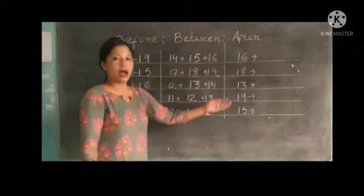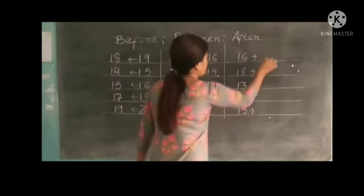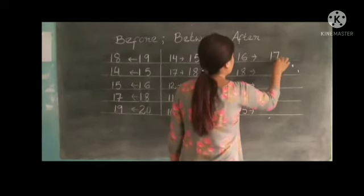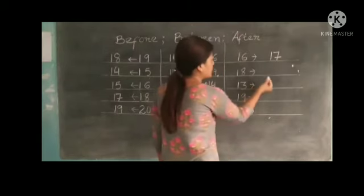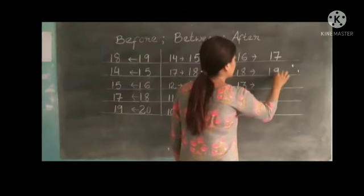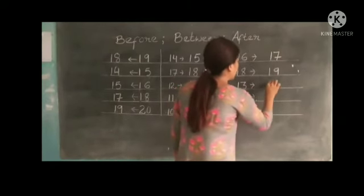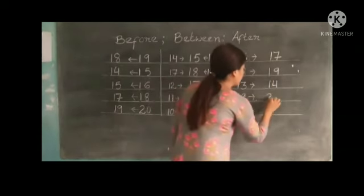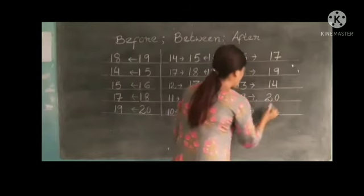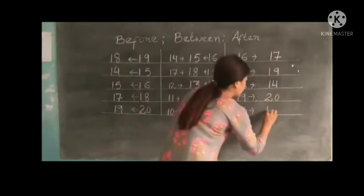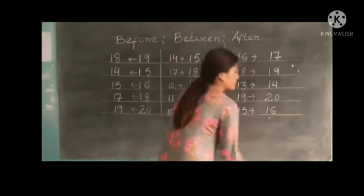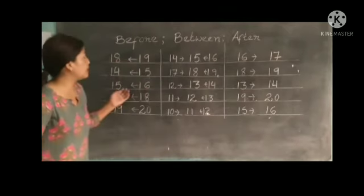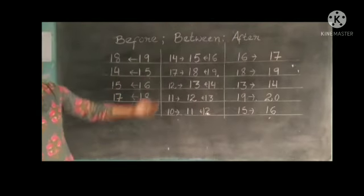Now here, after. After 16 is 17. After 18, 19. After 13, 14. After 19, 20. After 15, 16. These are the numbers before, between, and after.